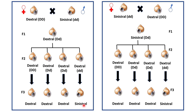Now let's see the reciprocal cross. Here the mother is sinistral — that is small d small d — and the father is dextral — that is capital D capital D. If we cross them, all the progeny in F1 would be capital D small d, and they are sinistral. Why are they sinistral? Because their maternal genotype is small d small d, which is sinistral.